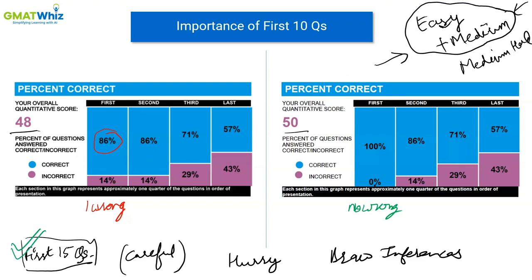Even if your accuracy is around 50% in the later sets, you can still end up with a very good score. In my case, looking at the second and third sets, my average accuracy was somewhere around 65% — I was getting about two out of every three questions right — and I still ended up with a Q50. Let me take you through another use case where a student did not have 65% accuracy in the last two sets.